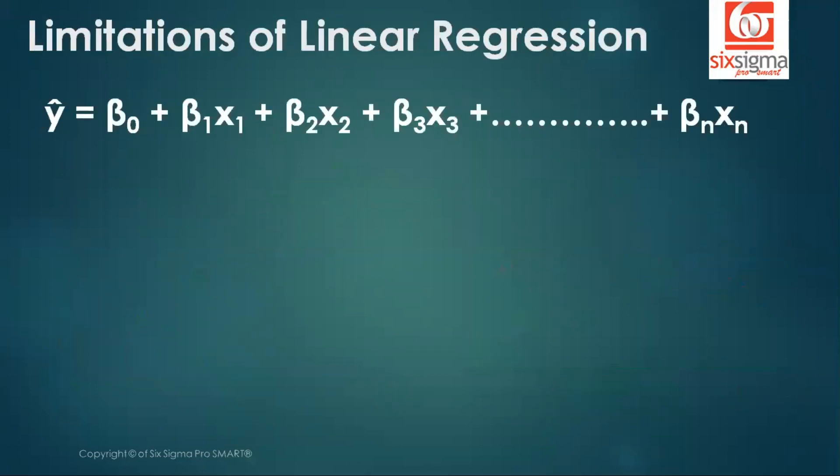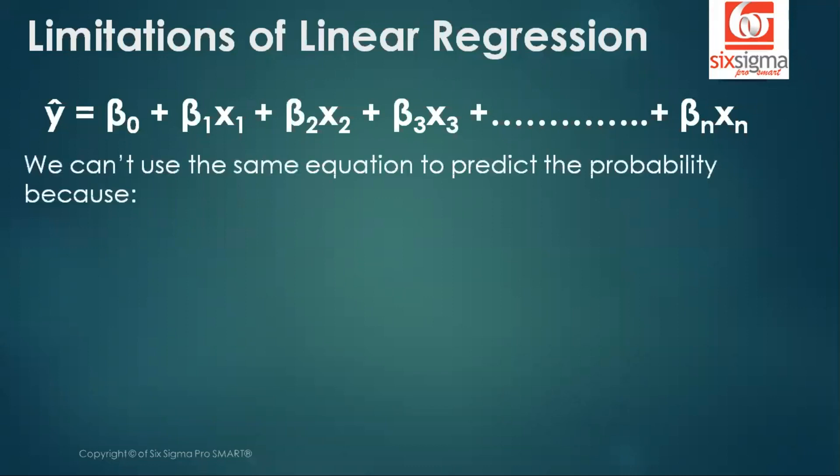Let's understand what are the limitations of linear regression. We all have seen multiple linear regression. It is simply an extension of the simple linear regression where you have more than one x. But we can't use the same equation to predict the probability as required in the case of classification because number one, the probability always lies between zero and one. And in this case of linear regression, we never had such restriction. Given a combination of x's and the coefficients that we calculate, we can get any value of y. It will not necessarily be limited between zero and one as it is required in the case of probabilities.